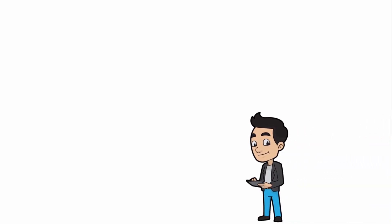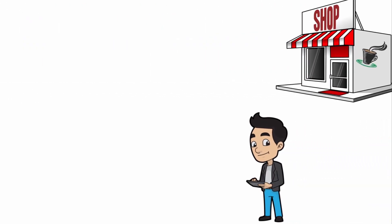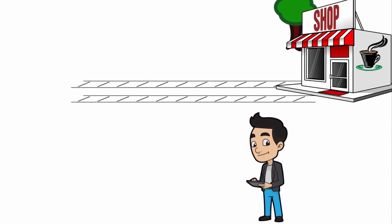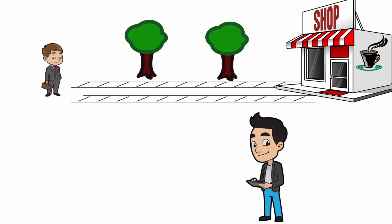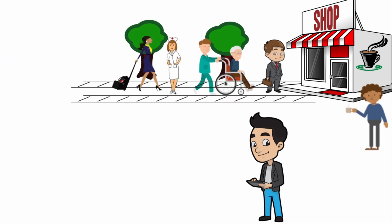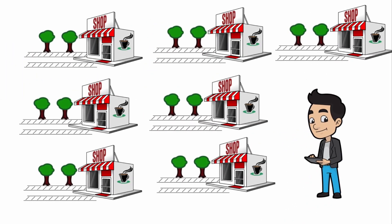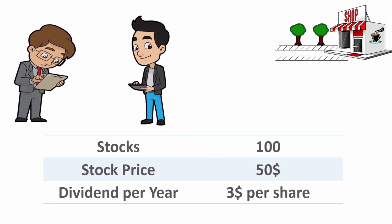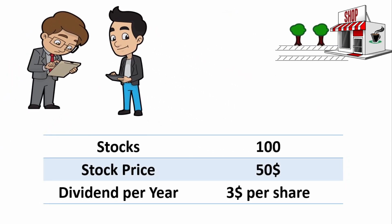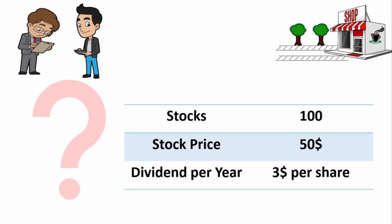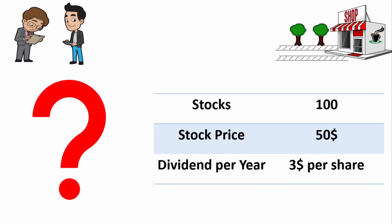Hi guys, remember Joe? He helped us understand the price-to-earnings ratio in the previous video. His business grew so well that he turned it into a chain of coffee shops all over town. Joe is a good friend and he offers me to buy 100 stocks of his company at a stock price of $50 per share, and he also pays a dividend of $3 per year. How can I decide if investing in Joe's company is a good idea?